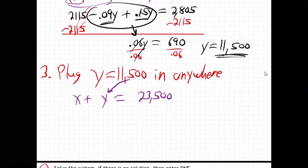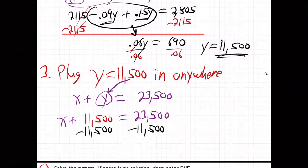X plus Y, 23,500. Plug in Y right there. X plus 11,500 is 23,500. Subtract 11,500 from both. And we get X equals, what is that, 12,000? Yeah. 12,000. So X is 12,000.